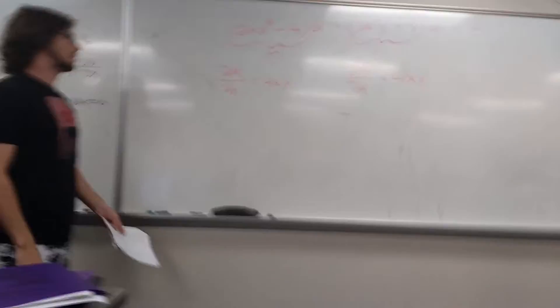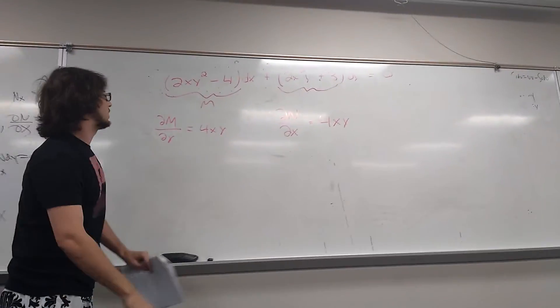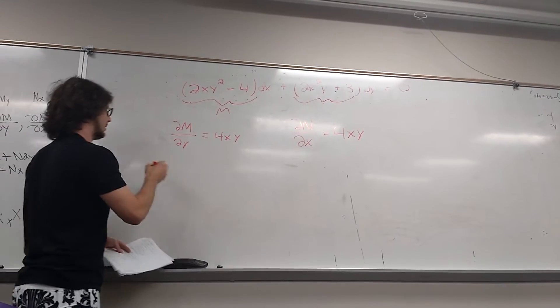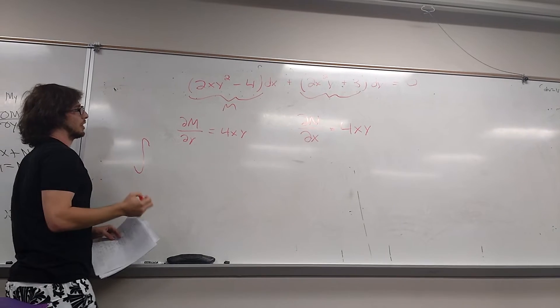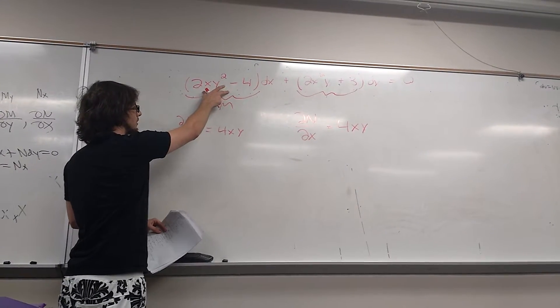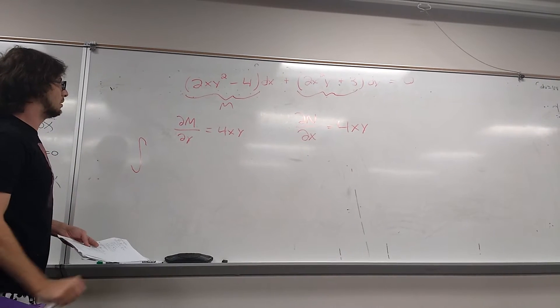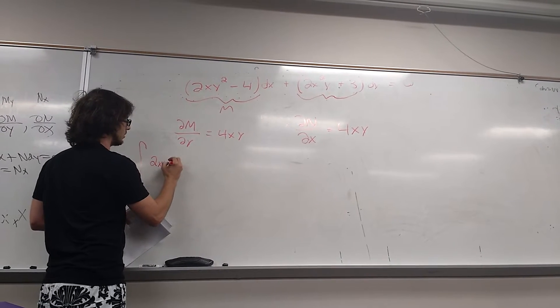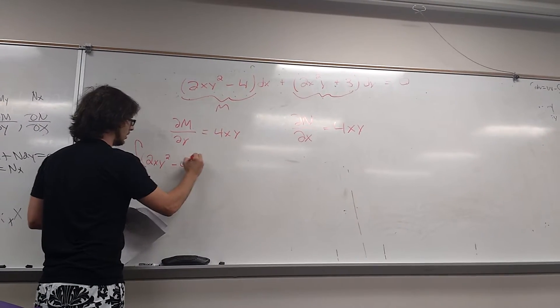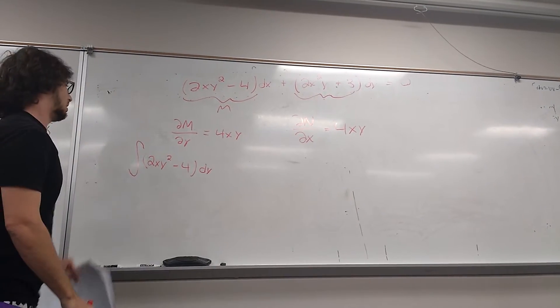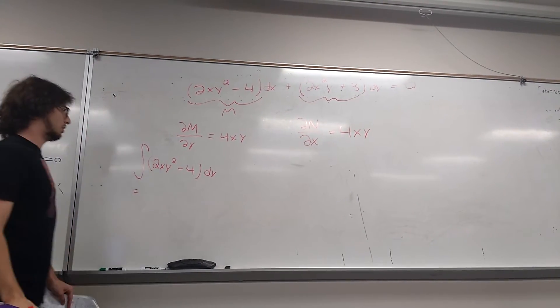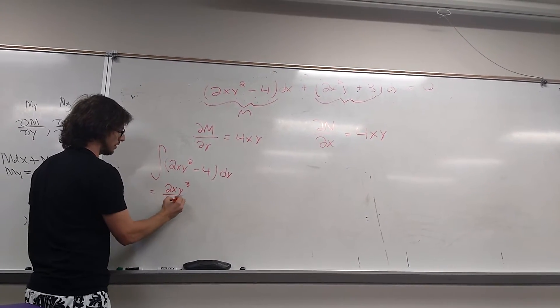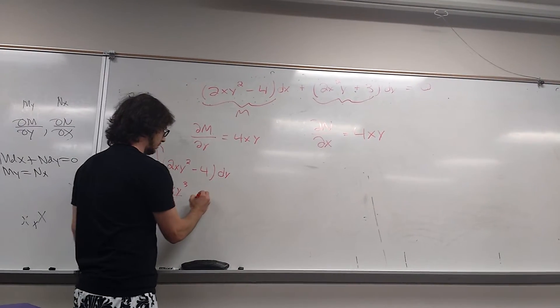Alright, so since it's exact, what we do is we just are going to integrate the piece that makes it exact only once between both of them. So let me write that to make it a little more clear. So we're going to integrate this guy with respect to y. So you get 2xy squared minus 4dy, and then when we integrate that you just get 2xy cubed all over 3. And then over here you just get minus 4y.